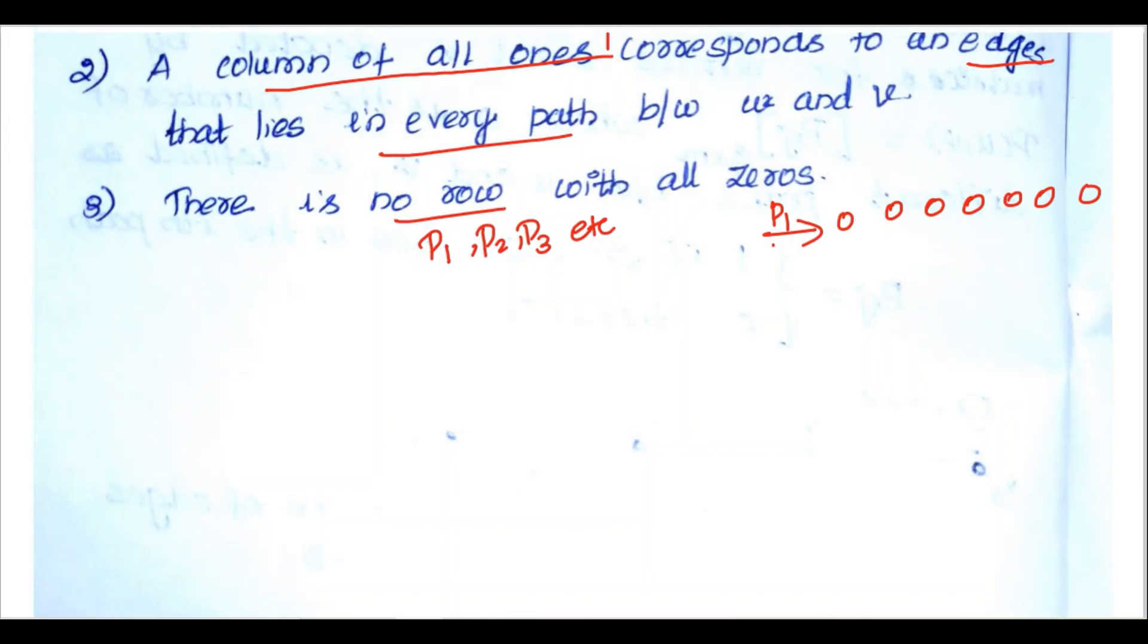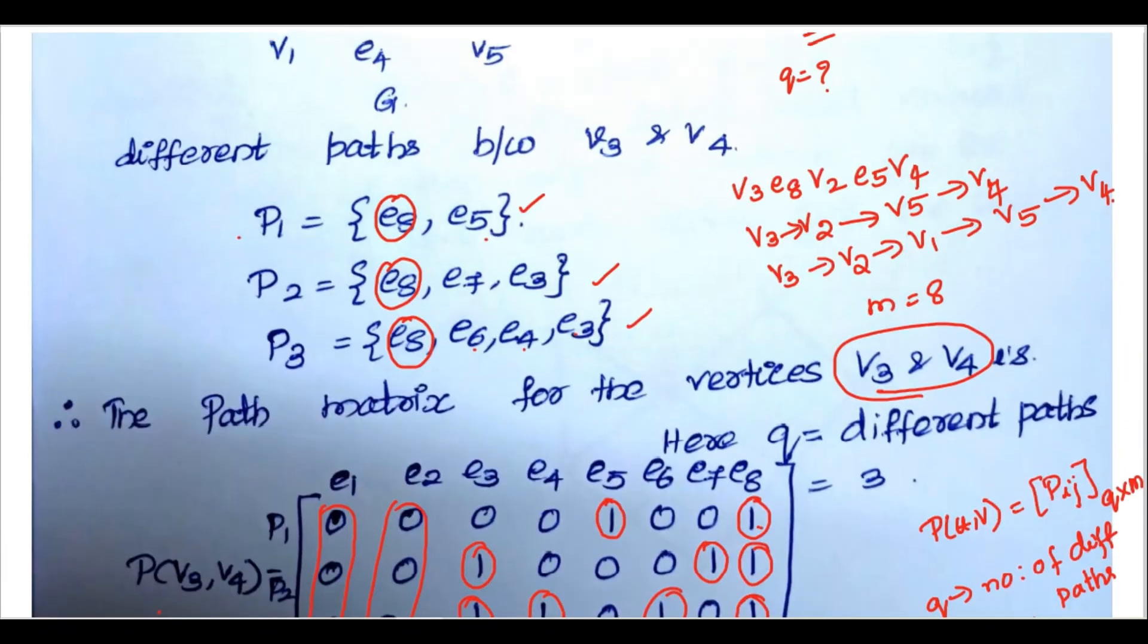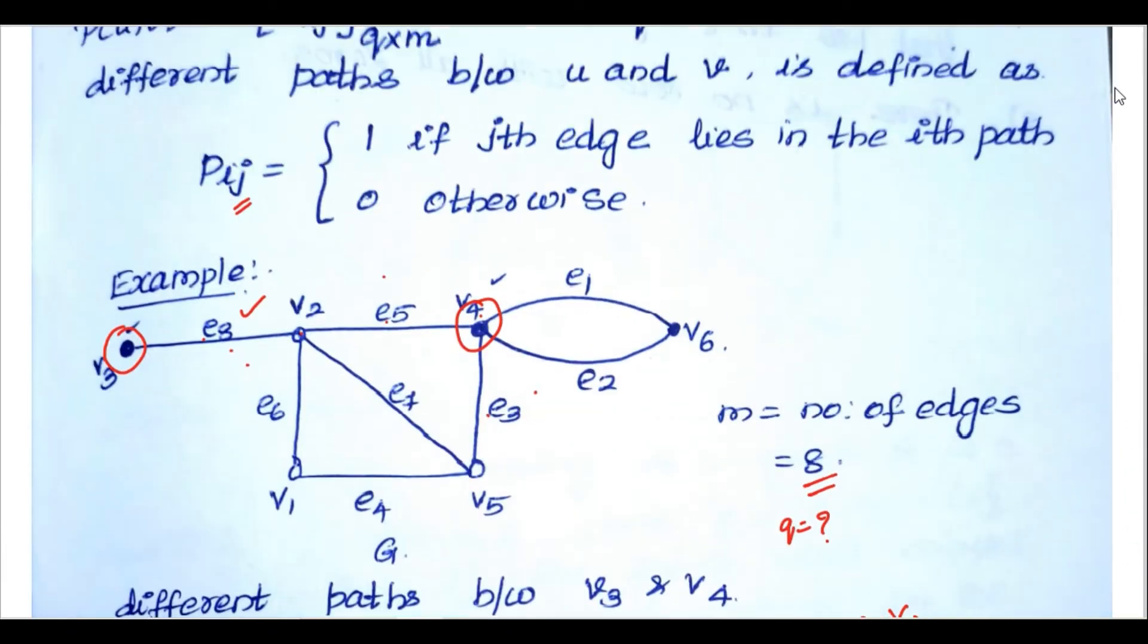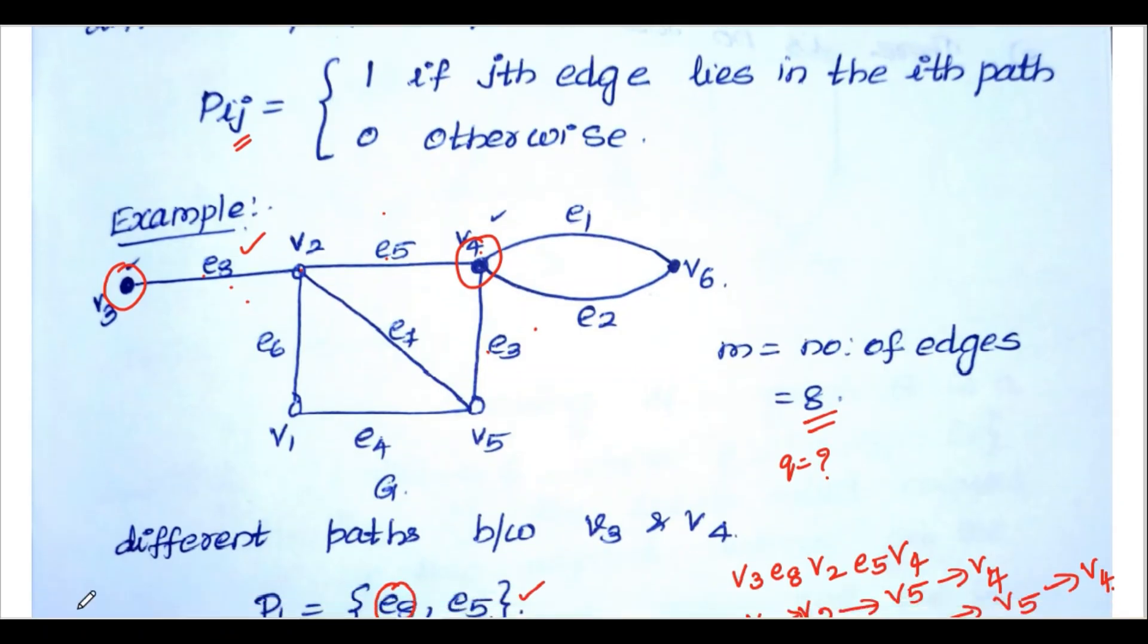This is the path matrix definition, example, and some observations. Hope you have understood this example and the definition. If you have any doubts, please give me a message. Thank you.